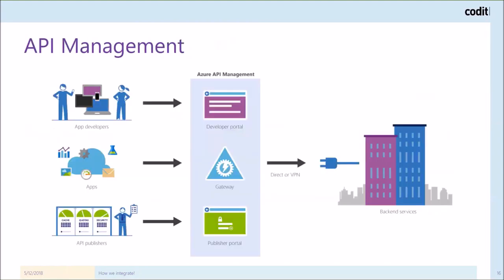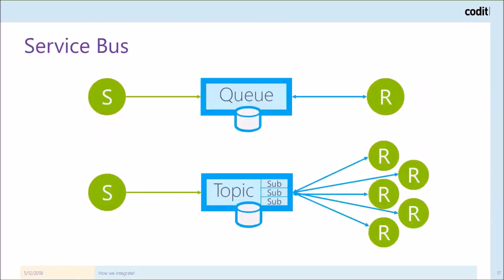Azure API Management is very important if you want to expose APIs both internally and to the external world. It comes with a developer portal that is live documentation of your APIs, ensuring fast adoption. In the publisher portal you can control who has access to which APIs and govern the whole onboarding process. The gateway is the runtime component that will handle security, transformations on the payload, validations, routing, and more features if you configure them.